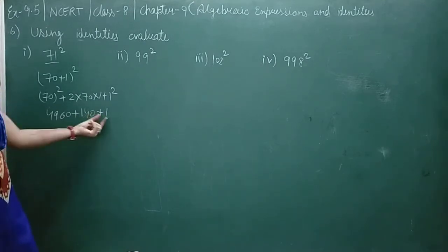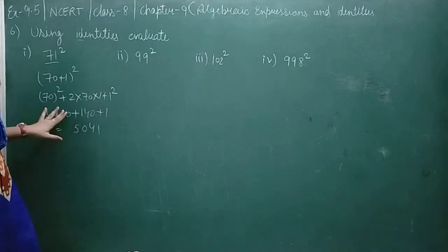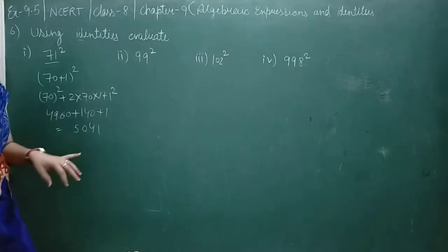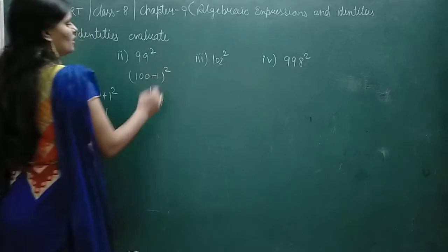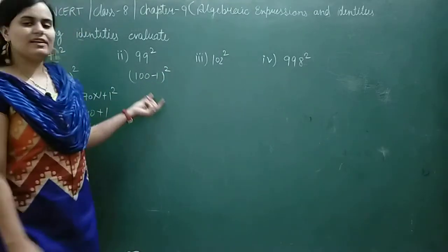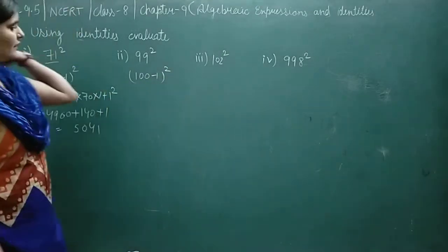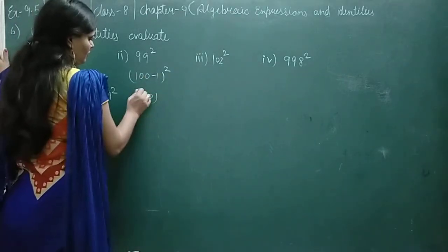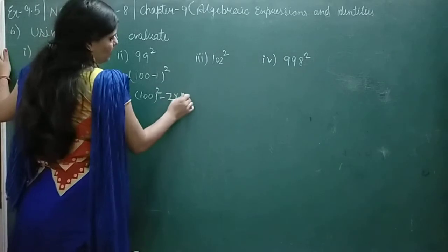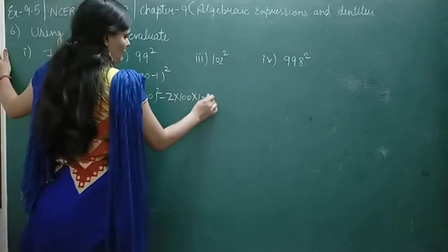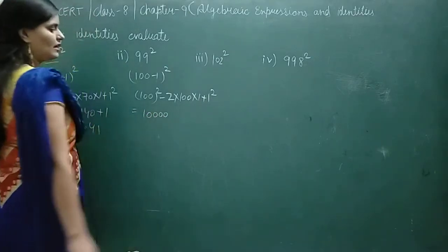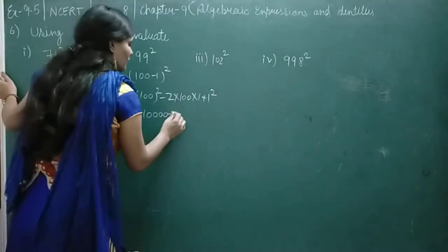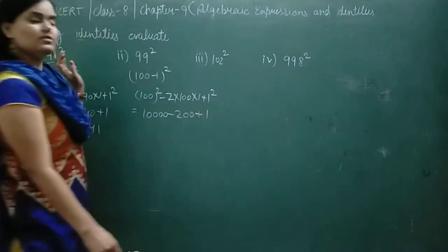So the last digit is 1. The second part: 1 + 4 = 5, and the third part: 4 + 1 = 5. Now 99² — we write it as (100 - 1)². Because we also have the identity (a - b)² = a² - 2ab + b². So: 100² - 2×100×1 + 1² = 10000 - 200 + 1.